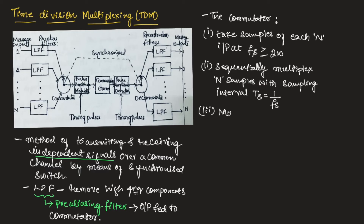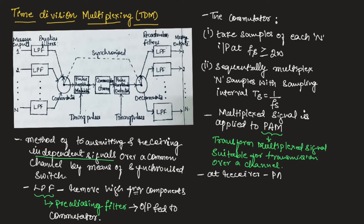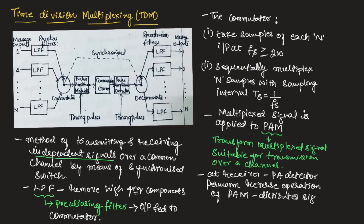The multiplexed signal is then applied to the pulse amplitude modulator. The function of the pulse amplitude modulator is to transform the multiplexed signal into a form suitable for transmission over a channel. At the receiver, the pulse amplitude detector performs the reverse operation of the pulse amplitude modulator and distributes the signal to the appropriate low pass filter, which produces the message output.